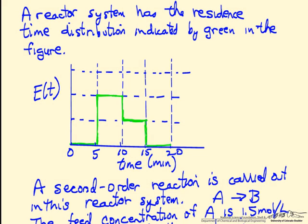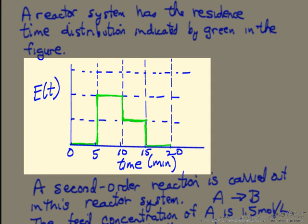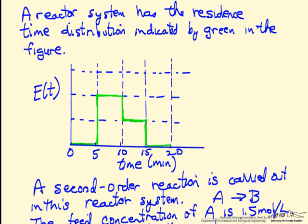This is an example of using a measured residence time distribution and the idea of segregated flow to calculate what the conversion would be in a reactor system with that residence time distribution. Shown here is this residence time distribution, E of t, represented by the green line — a simplified residence time distribution to make the calculations easier and see the behavior. A grid of dashed lines is indicated on the graph because we need to put a scale on this in order to apply the residence time distribution to conversion.